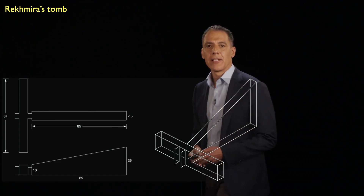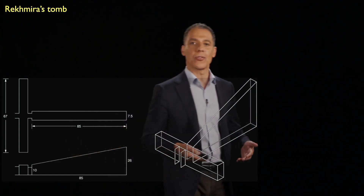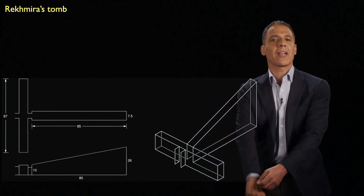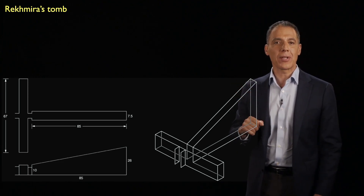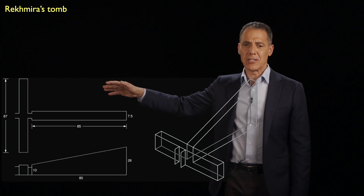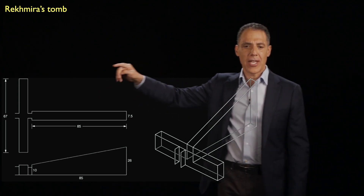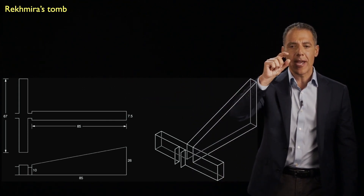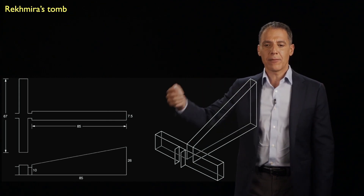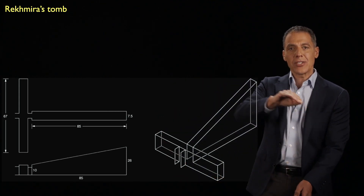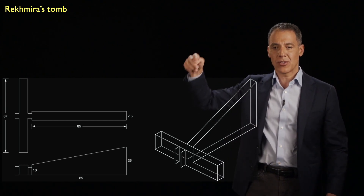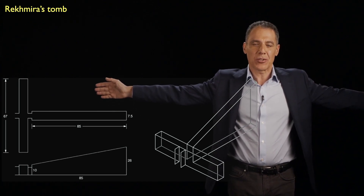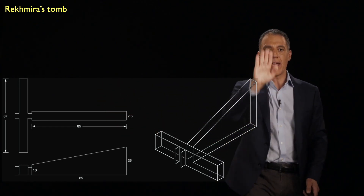I remember going to Luxor and visiting some of the tombs of the nobles and of the kings and of the queens. One in particular was really spectacular — this was the tomb of Rekhmira. What I'm showing you here is a floor plan of that tomb, which was truly amazing. From the top view, you can see it's a really long and very narrow tomb. From the side plane, you can see it also increases in height as you go out — basically seven feet or so wide, extremely long, and angling upwards.